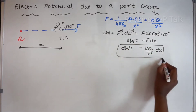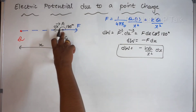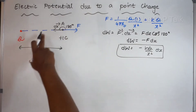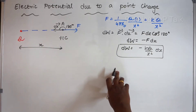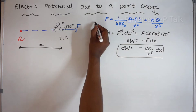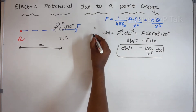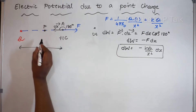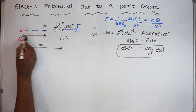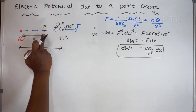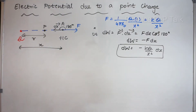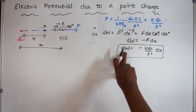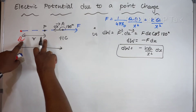This is the small amount of work done in bringing a 1 coulomb charge through a small displacement dx. We have electric potential at a point on this electric field line. To find it, I have to bring a charge from an infinite distance to a point on the electric field line. I have to integrate this equation from infinity to R.